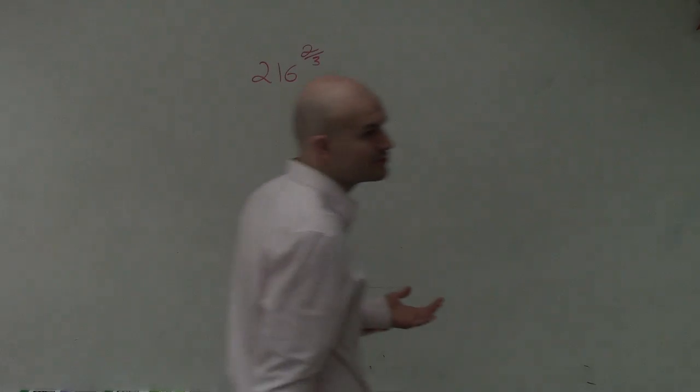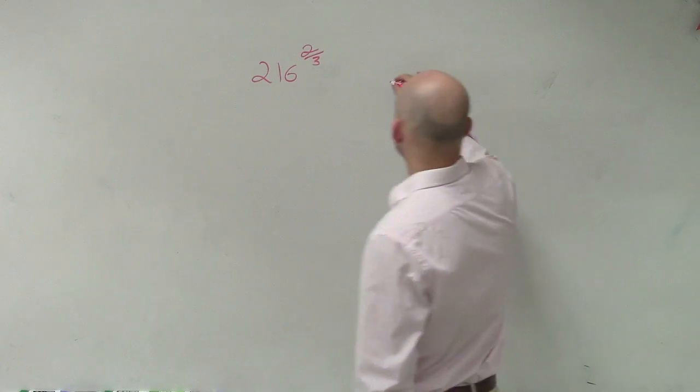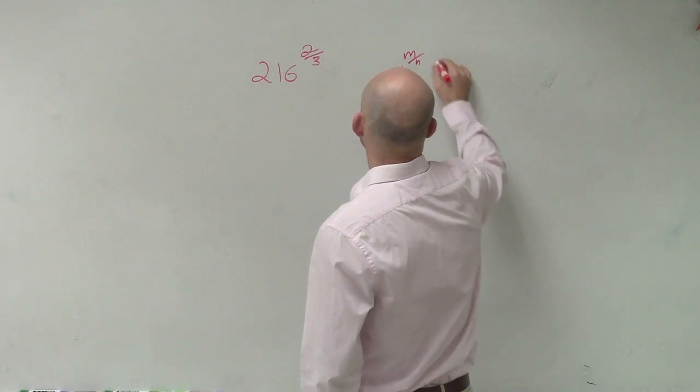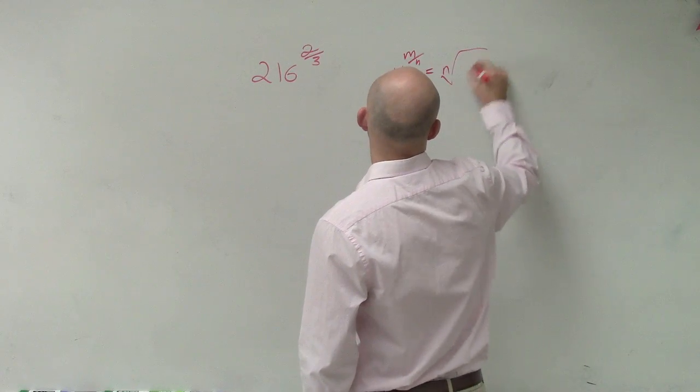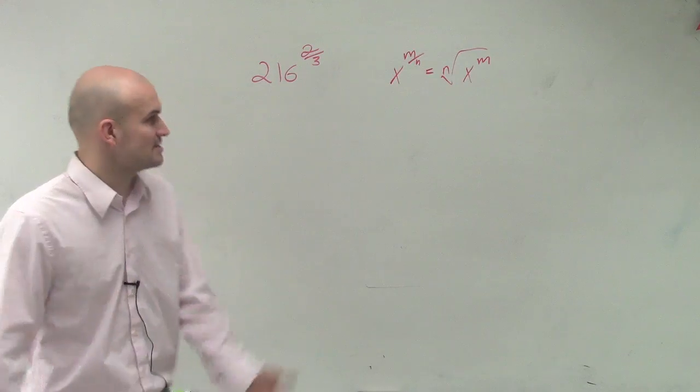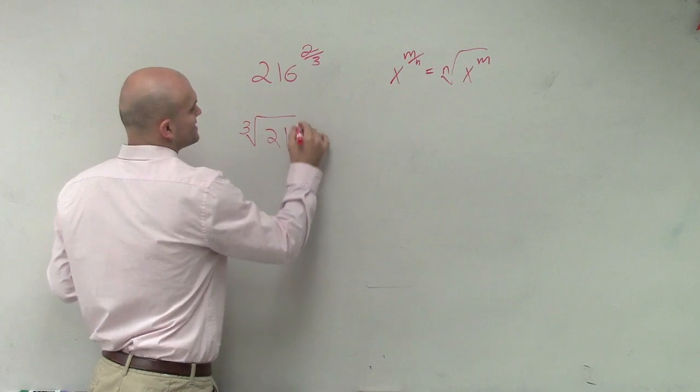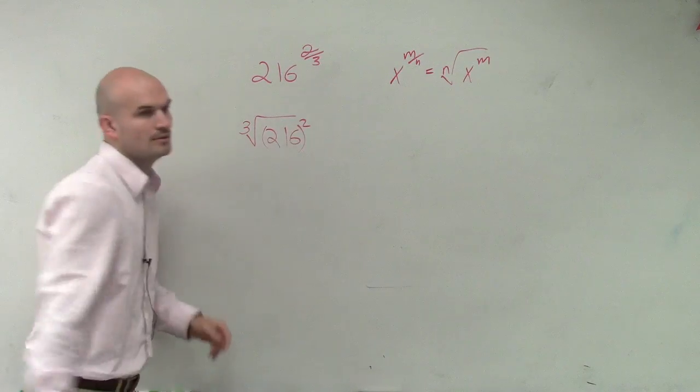If I give you 216 to the 2/3rds, our most common reaction is say, okay, I think I kind of get this now. I know that x to the m over n, that equals nth root of x to the m power, right? We kind of get this underway. So there we can say, well, then this is the cube root of 216 squared, right?